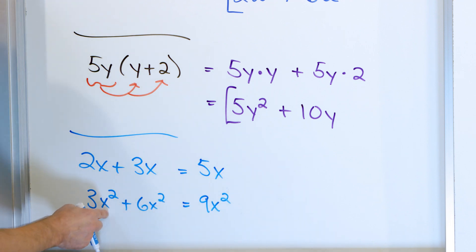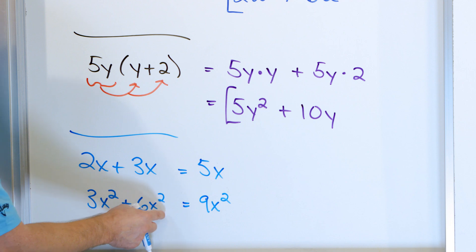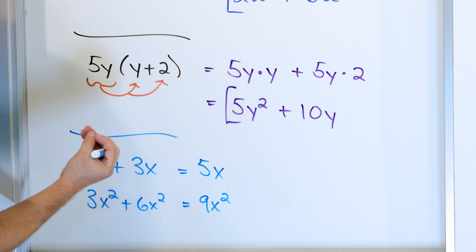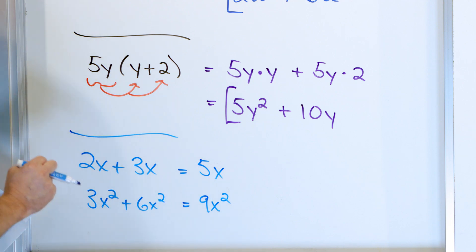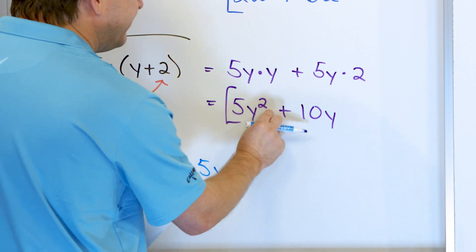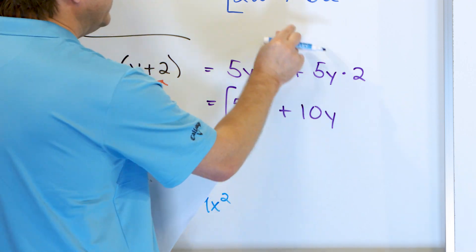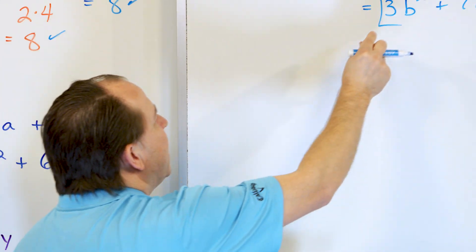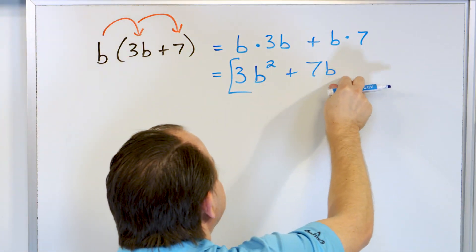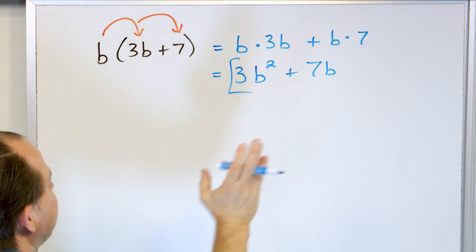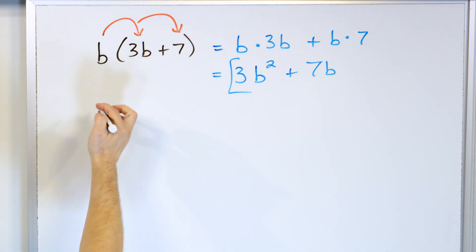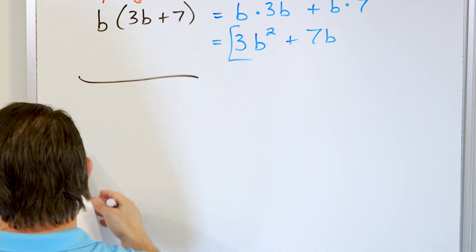But when the objects are totally different — different exponents — we can't combine them any further than what's written on the board.